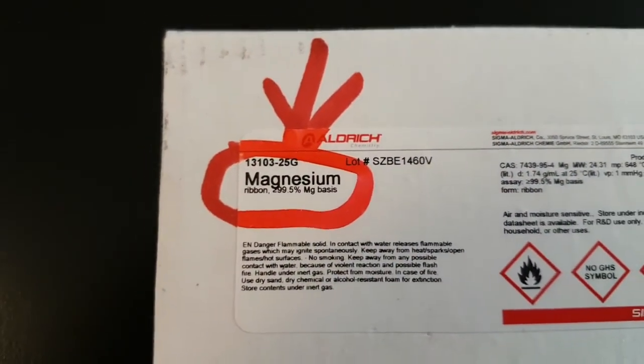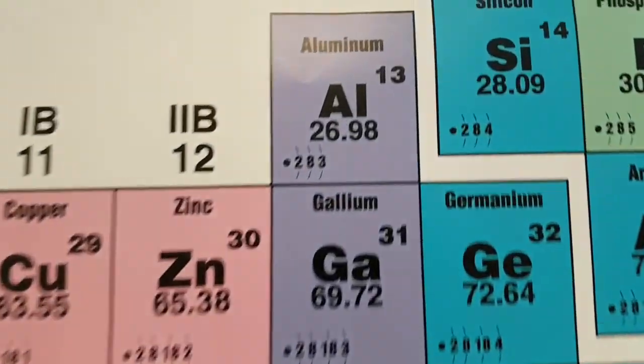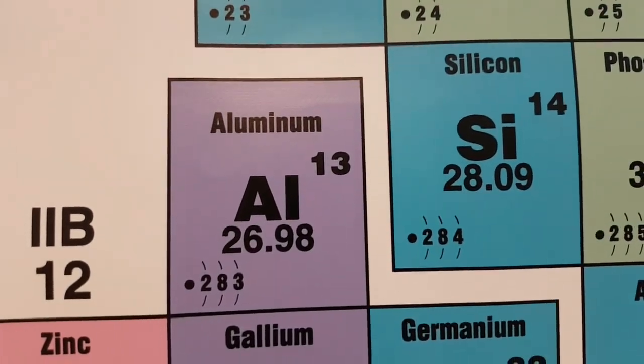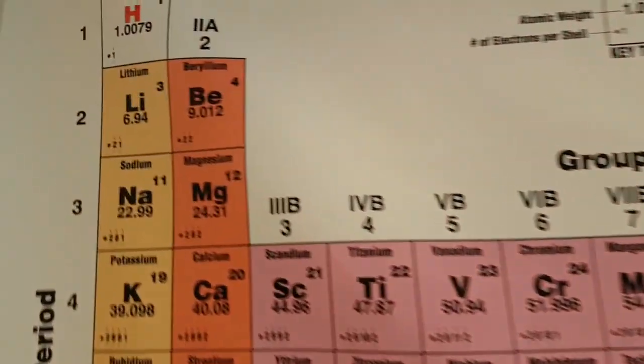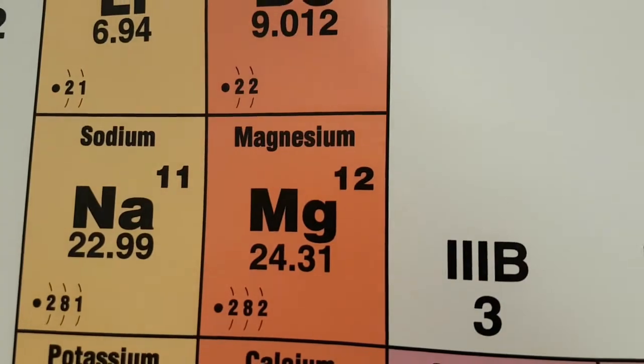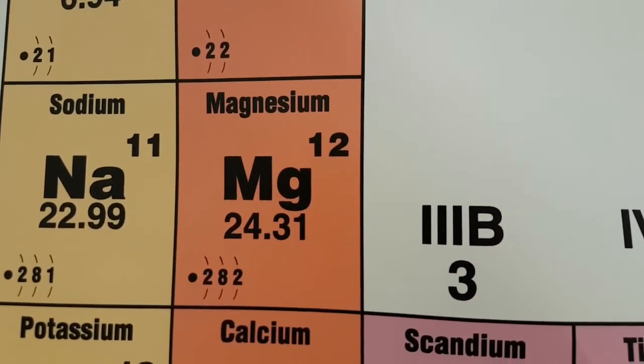Let's check out the periodic table. 28 is actually silicon. So I wasn't as close as I'd hoped I'd be. Magnesium, that's 24 grams per mole. That's because there was a systematic error.